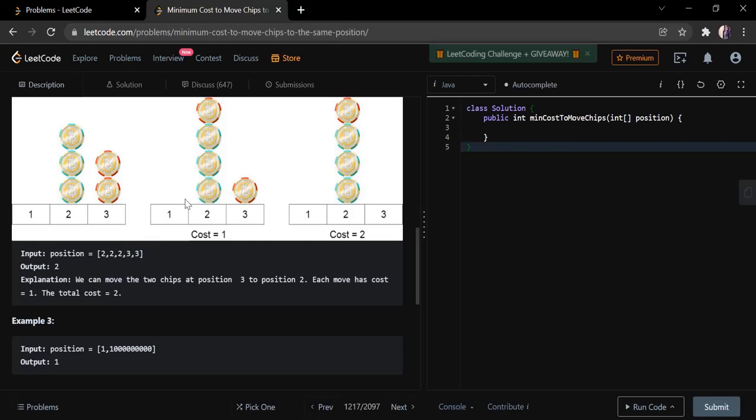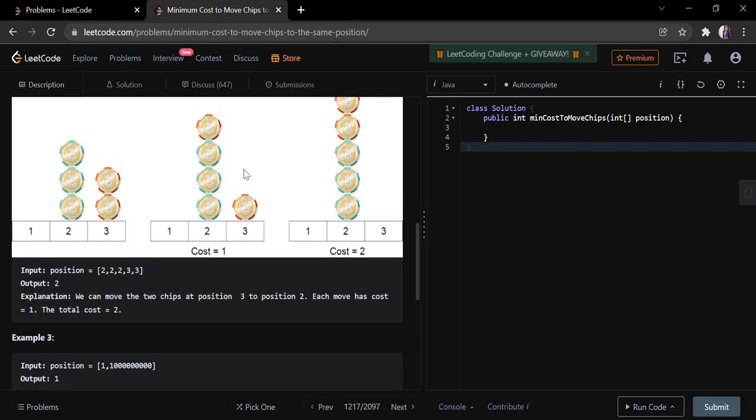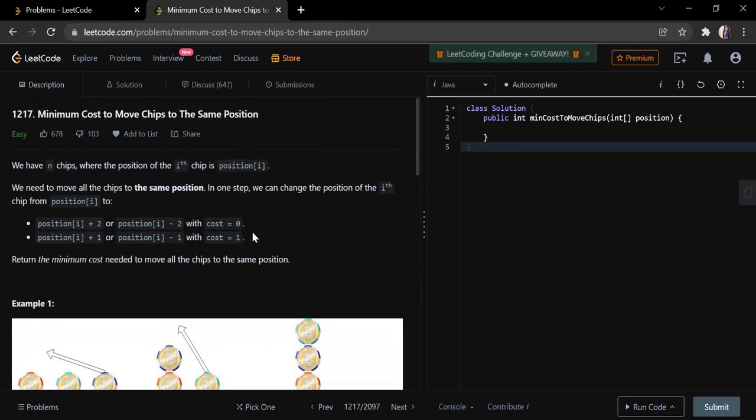So now we have to move the coins all to one position, and they did not specify which position. You can move every coin to any position you like. The rules given are if you are moving the coin by two places either backwards or forward then the cost is going to be zero, or if you want to move the coin by one position then the cost is going to be one. So we have to move all the coins to one position with a minimum cost and we have to return that as a result.